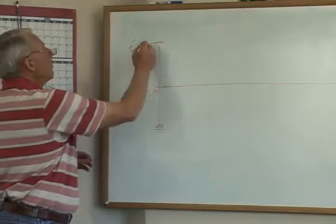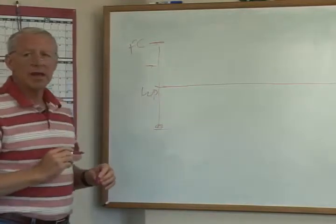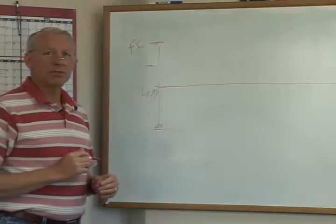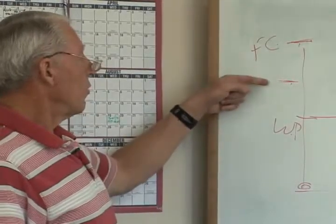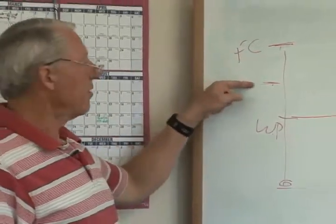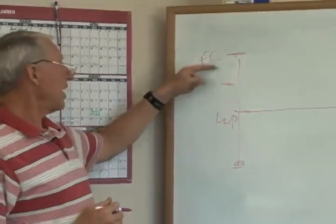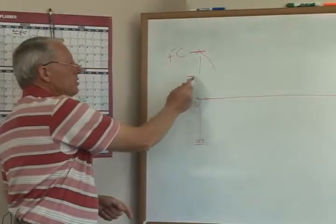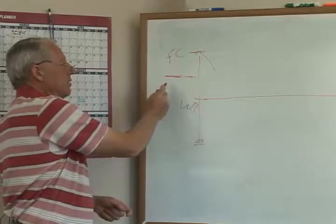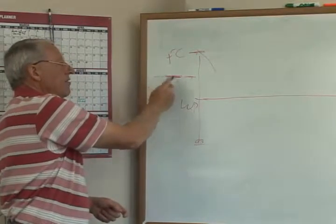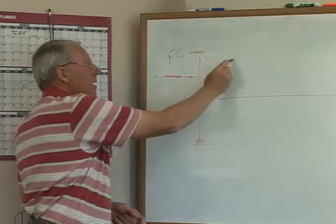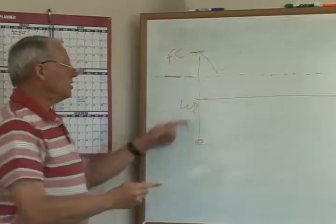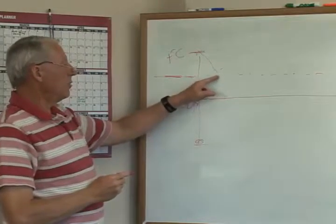So somewhere in here between field capacity and wilting point is readily available moisture or management allowable depletion. So what we want to do is manage our irrigations such that when we approach the soil moisture having used our management allowable depletion or readily available moisture, we irrigate again. This is a time when we would want to irrigate again.